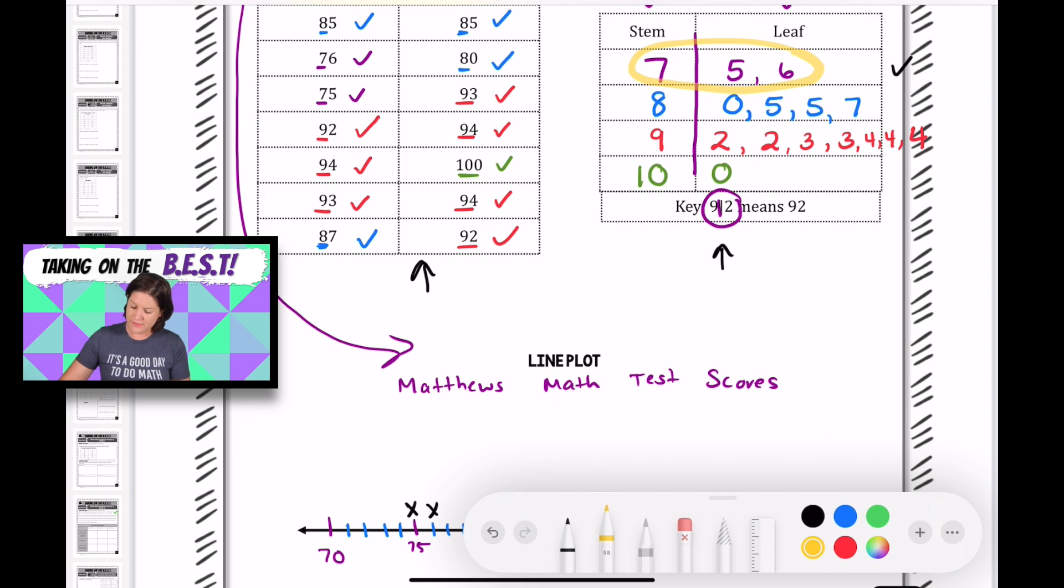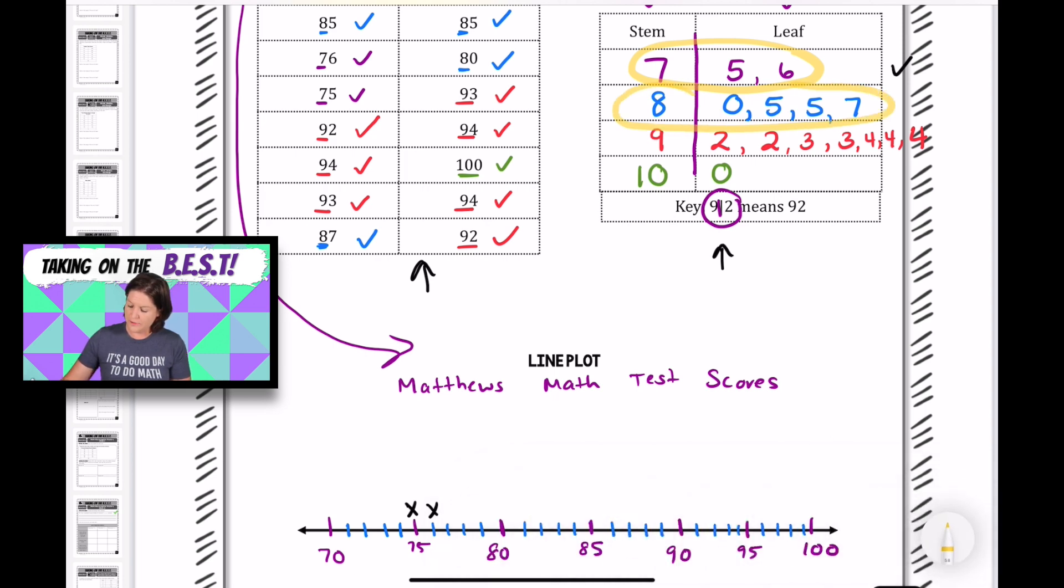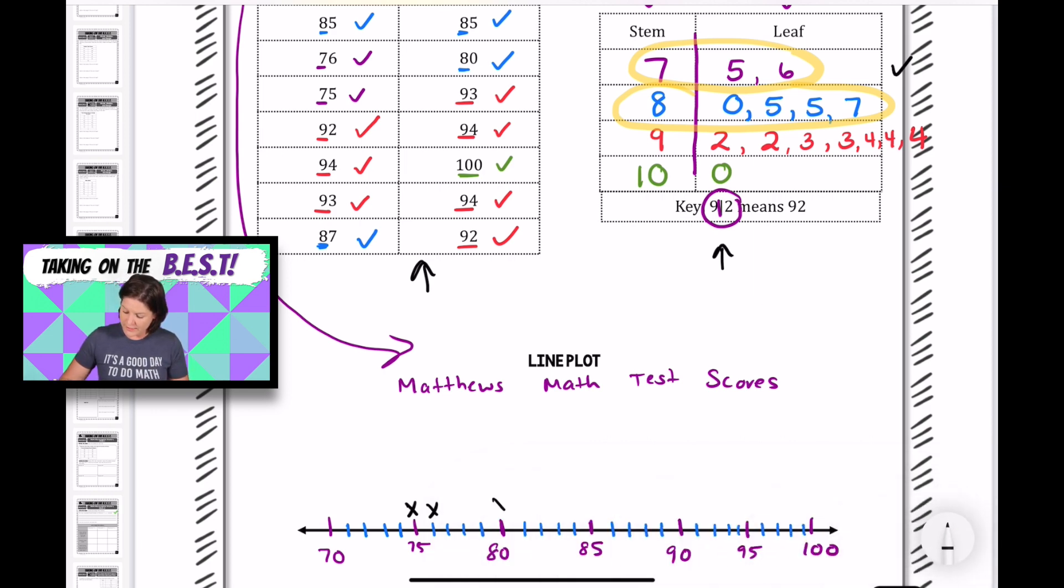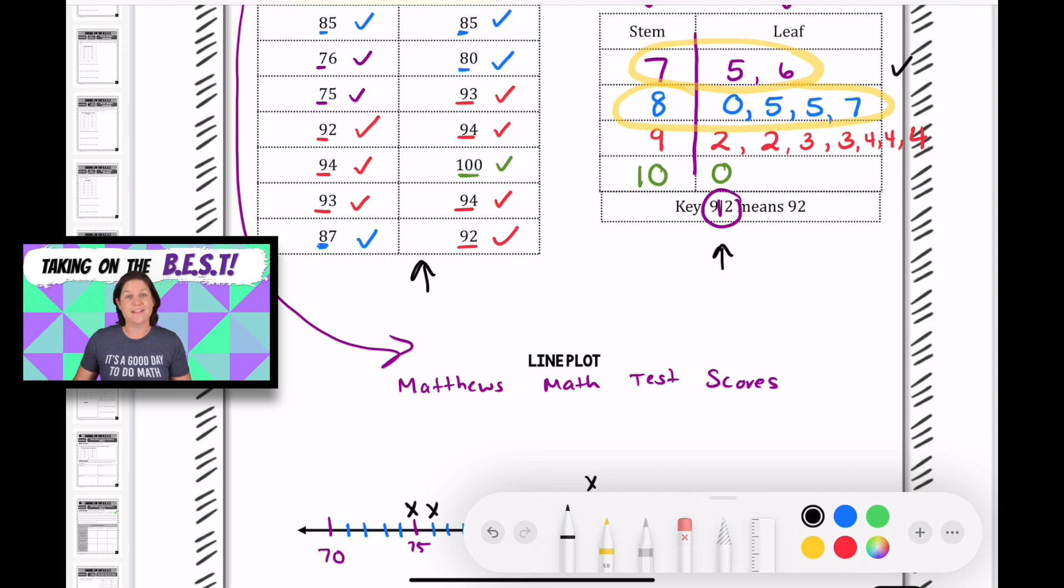For stems of 8 or 80, we have 80, 85, 85, 87. So 80, 2 for 85 because there's two 85 test scores, and 1 for 87 because we have one 87 test score. Make sure that you have that, and then let's keep going.